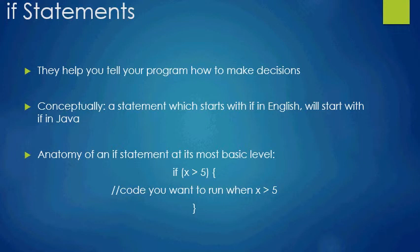That can be the outline of your program, and now that you have that, you can write more specific English steps. The first step was 'read user input,' so now you can write steps like: create a scanner, print out the request for the user to type the input, then use the scanner to retrieve the input, and finally you translate it to Java. One thing that is very important in this translation process is that a statement which starts with 'if' in English will start with 'if' in Java.